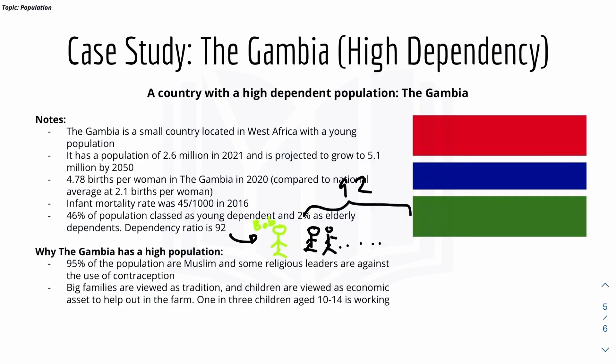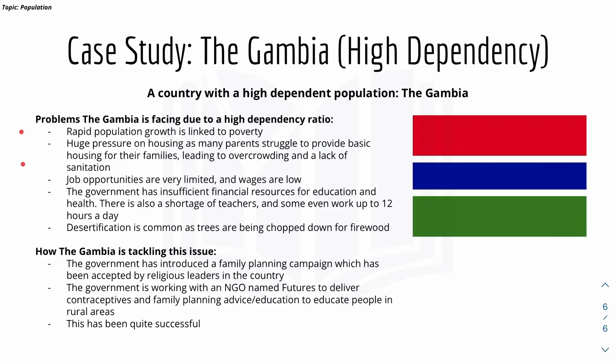Looking at why the Gambia has a high population: 95% of the population in the Gambia are Muslim, and some religious leaders are against the use of contraception, so religion is a big factor driving high birth rates. Additionally, large families are viewed as tradition, and children can help out on the farm, so families tend to have many children.